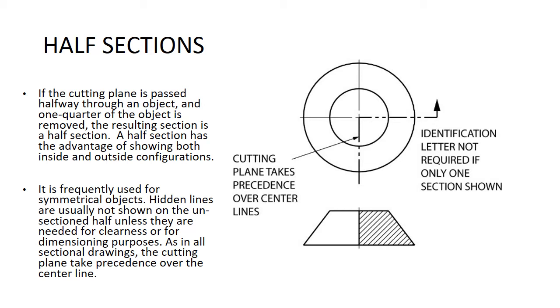Half sections. If the cutting plane is passed halfway through the object, one quarter of the object is removed. It would be like slicing a quarter of the apple. We're only going halfway into the apple in a couple different directions. A half section has the advantage of showing both inside and outside configurations.